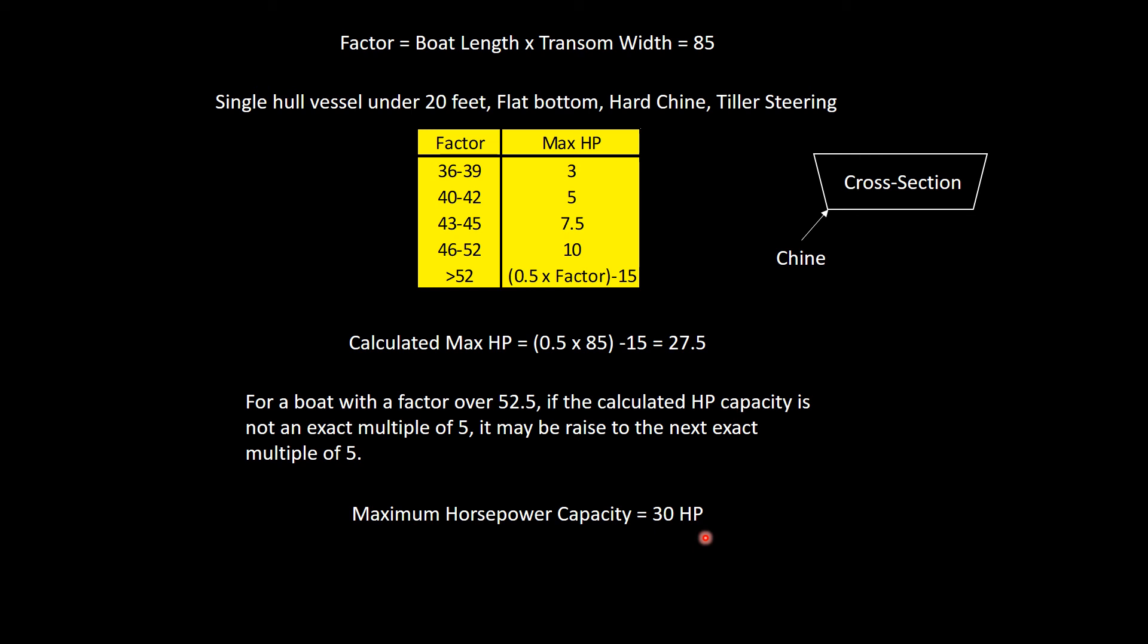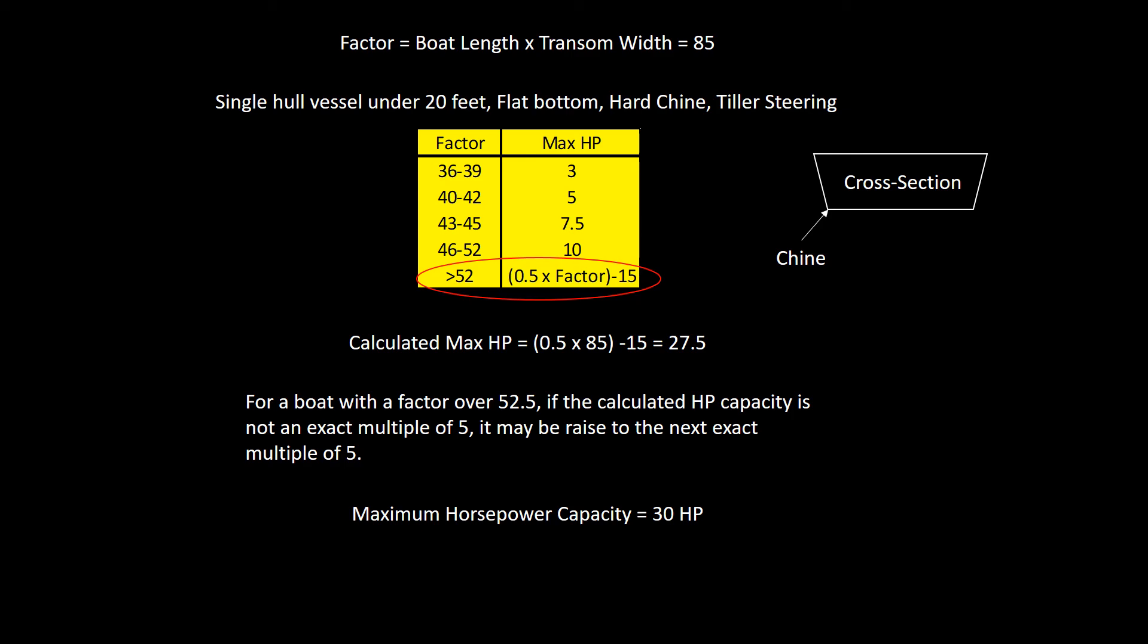Where does this go? Well, I'm sure you can guess. It goes on that Coast Guard sticker. We've computed a maximum horsepower capacity of 30 horsepower, and it goes right there on the sticker, max horsepower. So far, in the previous episode, we calculated this number, the maximum total pounds of persons, motor, and gear we can put in the boat. And now we've calculated the max horsepower we can install on the boat.